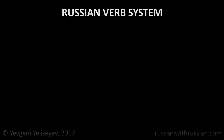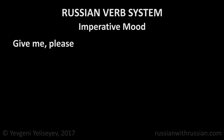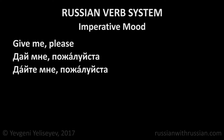Also, we have two forms of the imperative mood. For example, 'give me please' may be translated into Russian as дай мне пожалуйста or дайте мне пожалуйста. The first one — дай — is used when we address a person informally. The second one — дайте — is used as a polite form or for addressing several people.